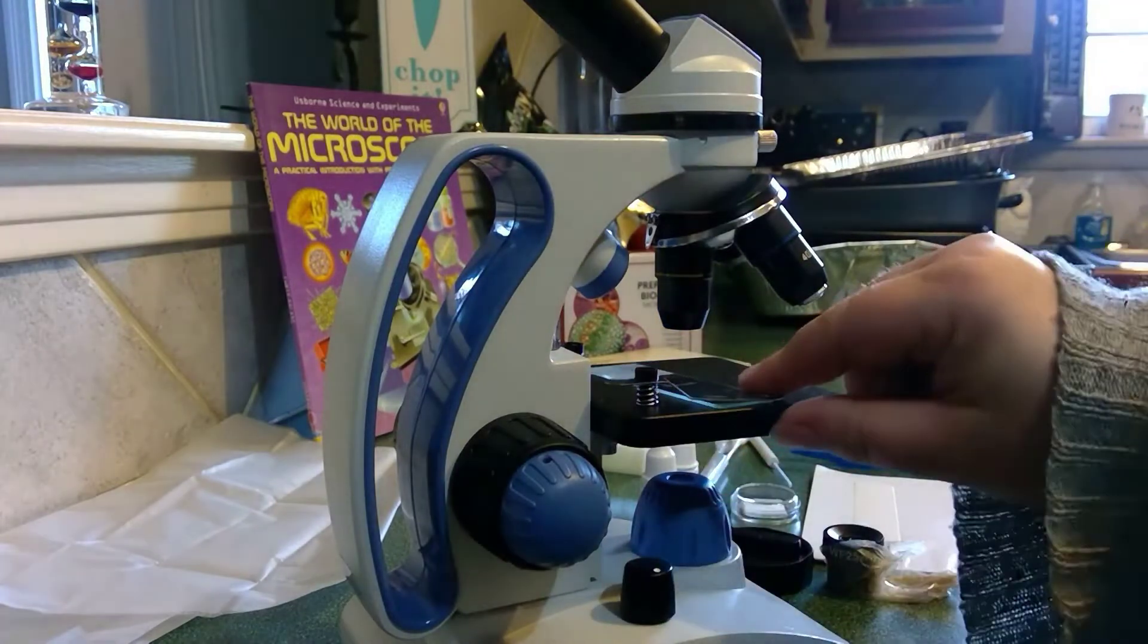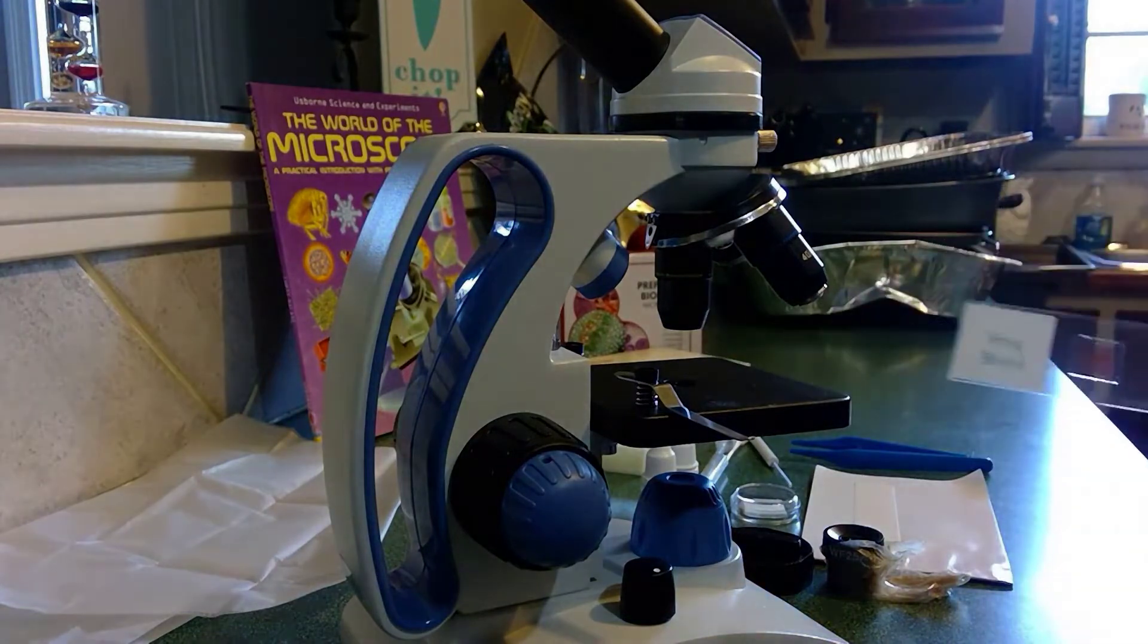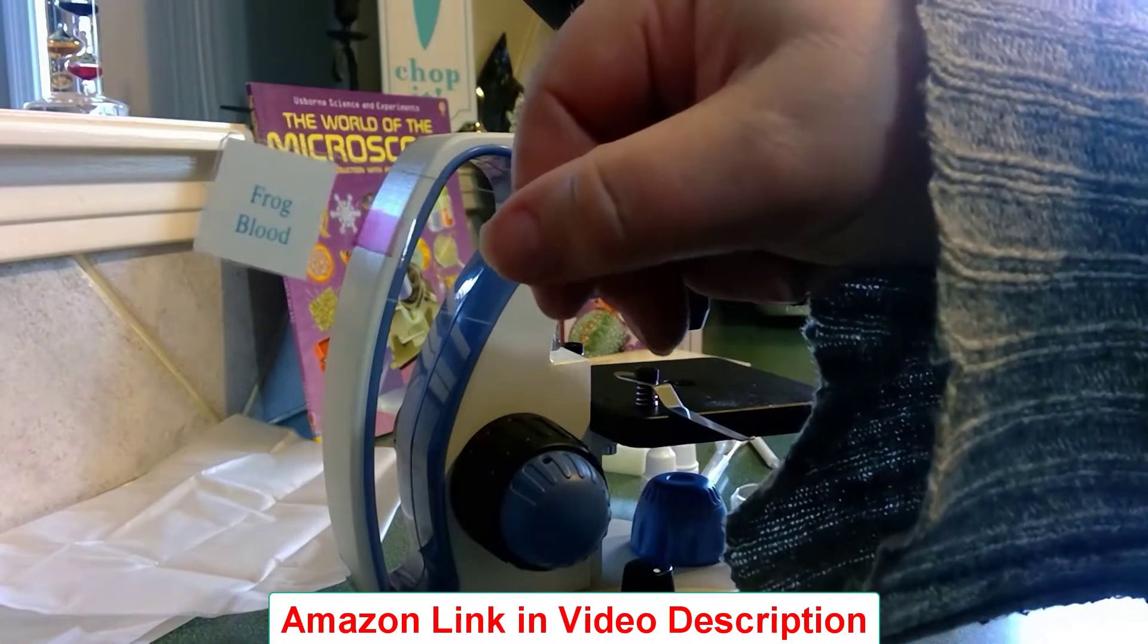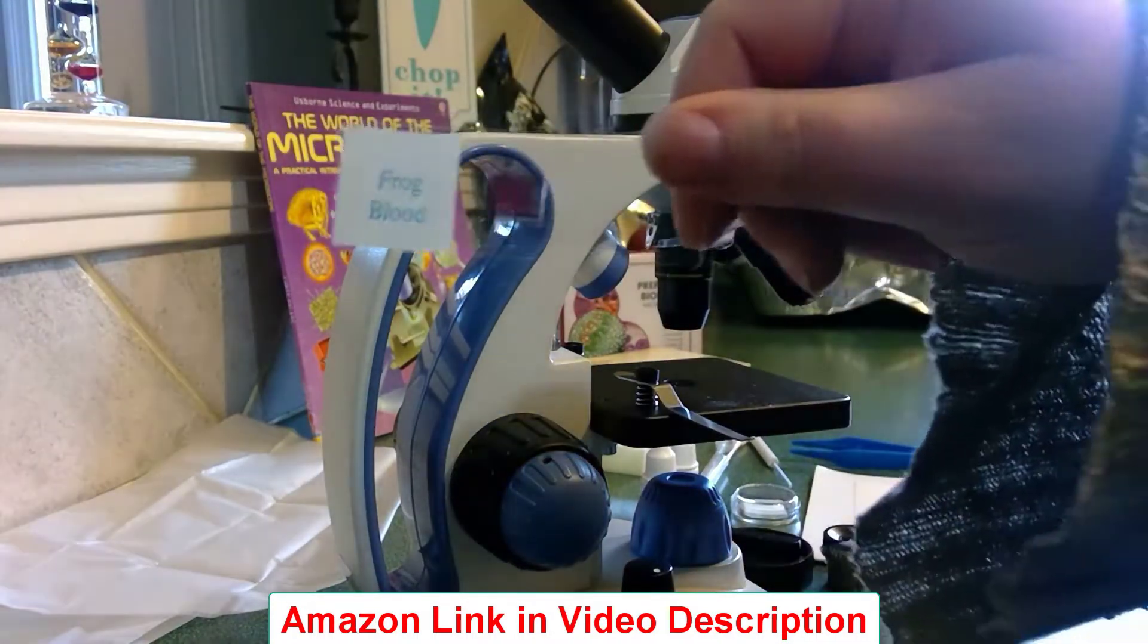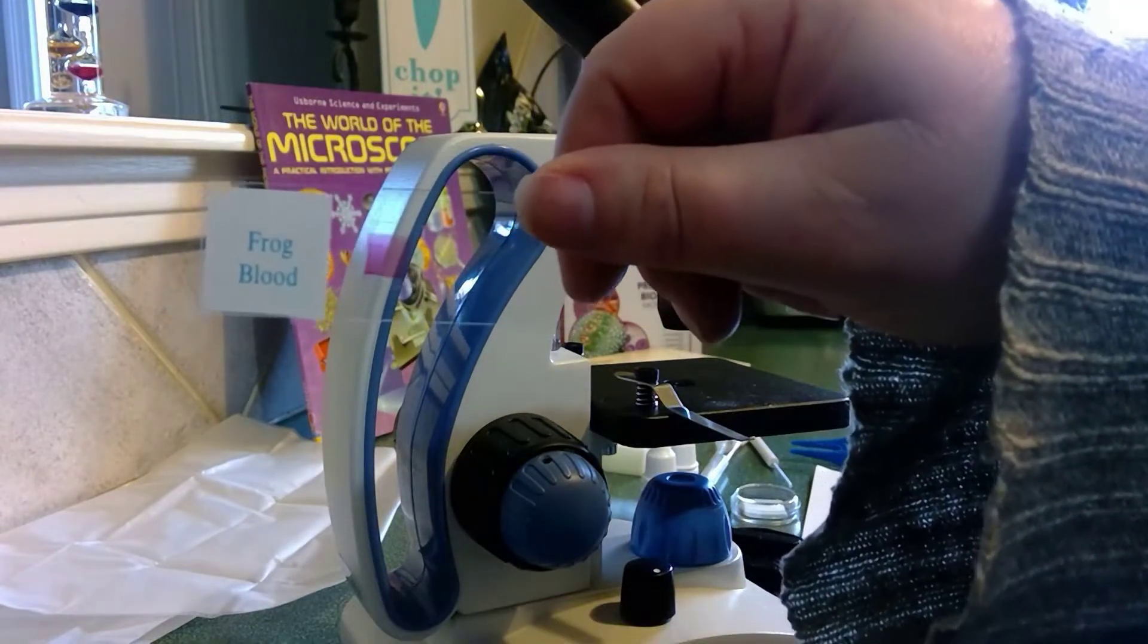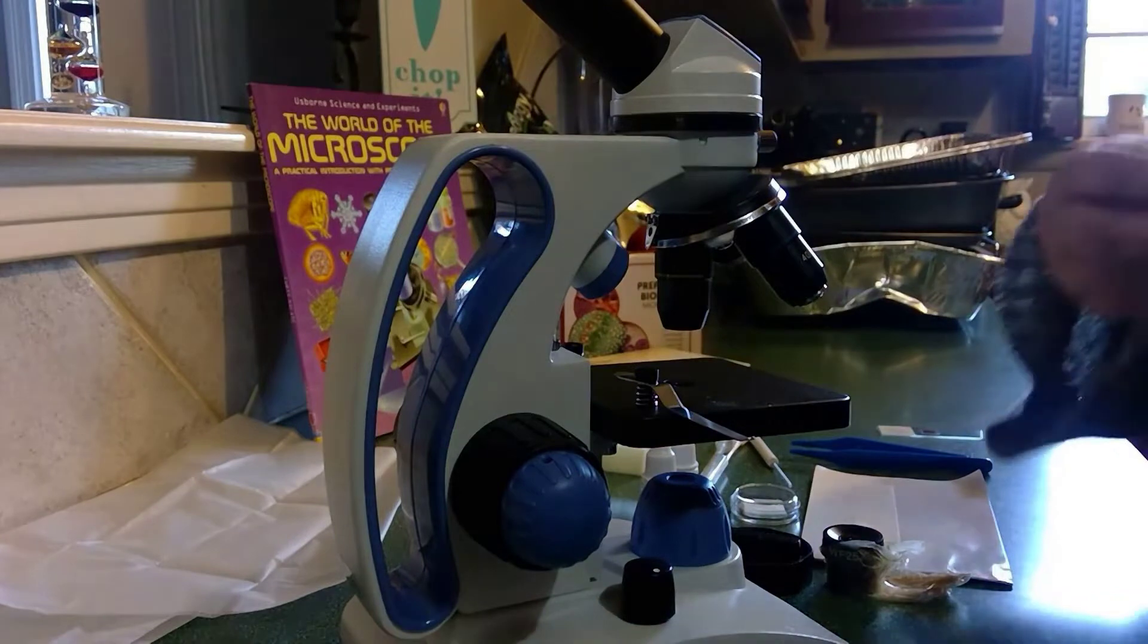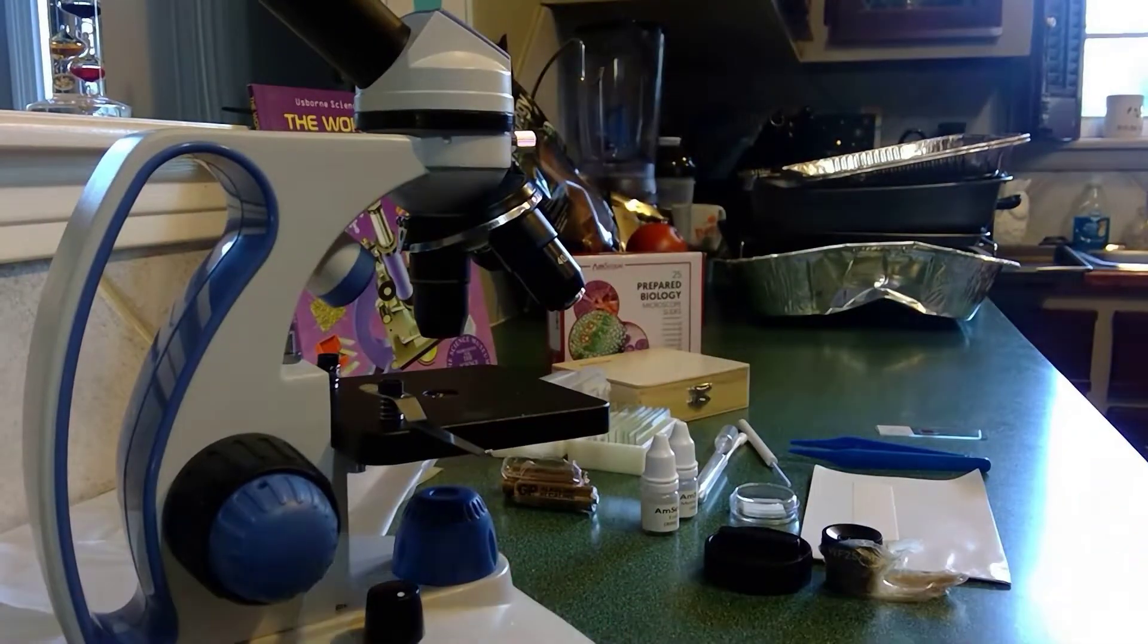So let me just show you some of the things that it comes with. There was already on there a slide that came with the kit. This is a slide of frog blood, which my girls had a fun time with, but also my youngest didn't like it very much because the idea of it coming from a frog and that a frog was hurt was not very fun for her to think about. But that was just part of the slide set that came with it.